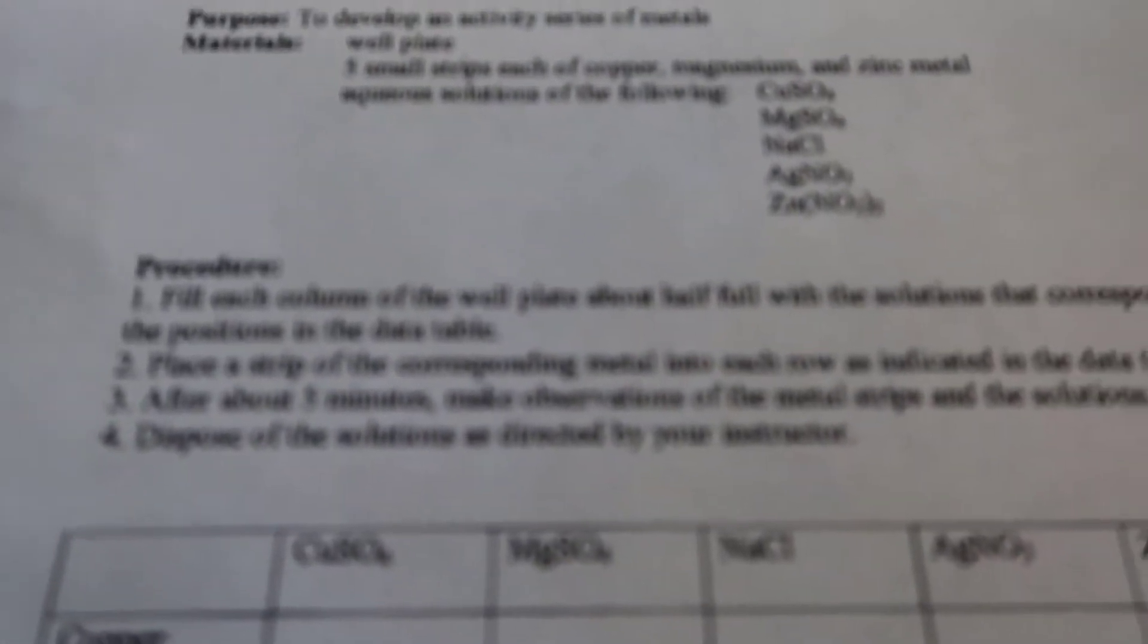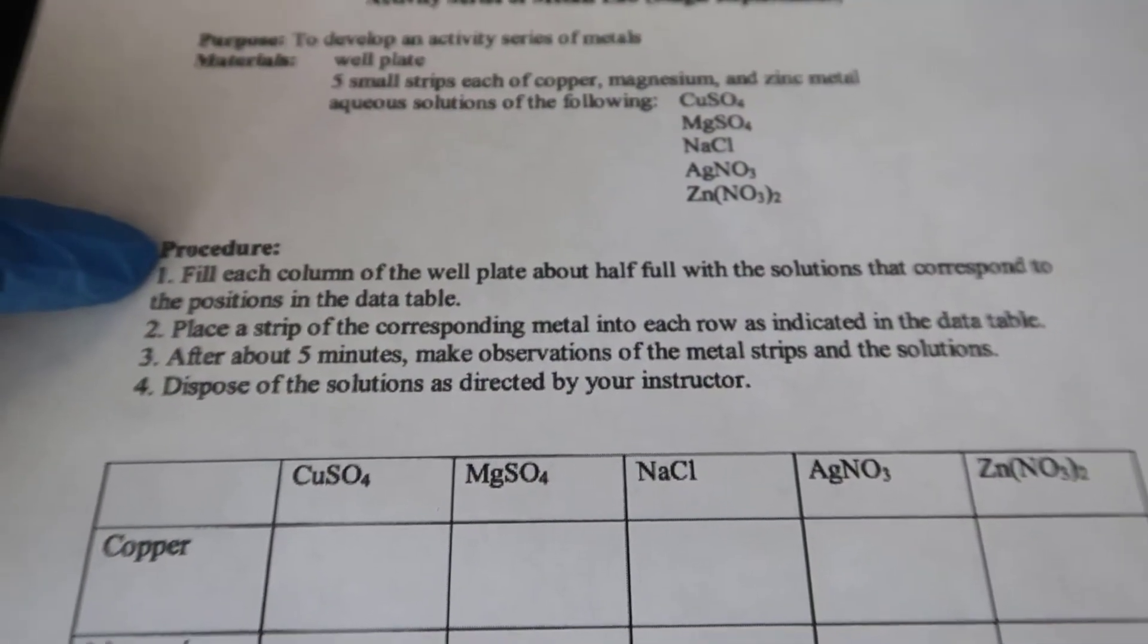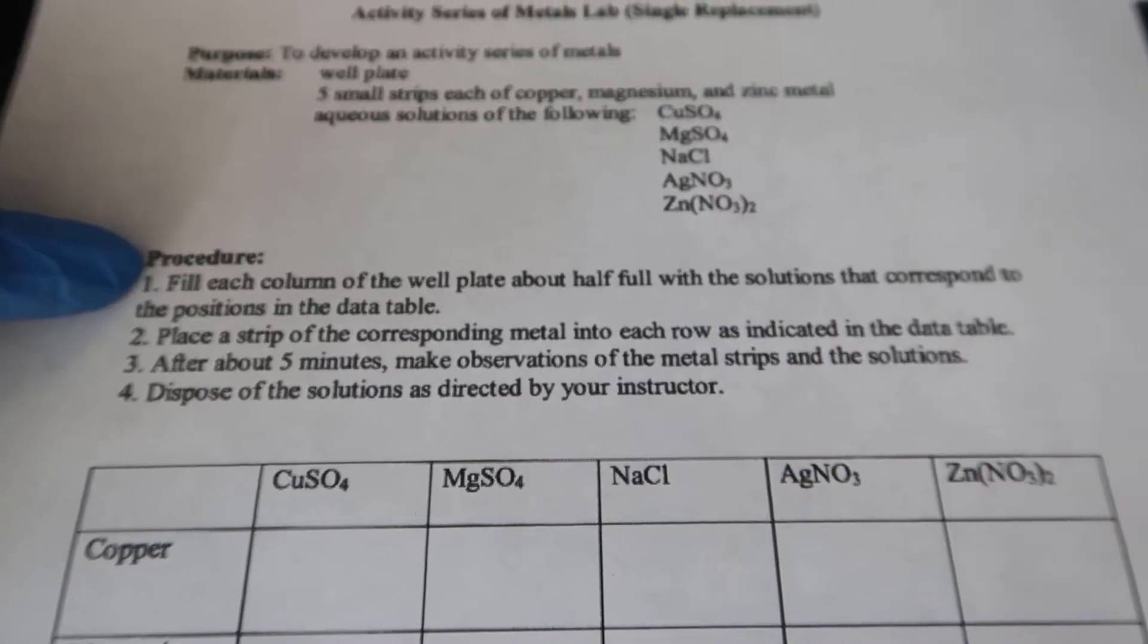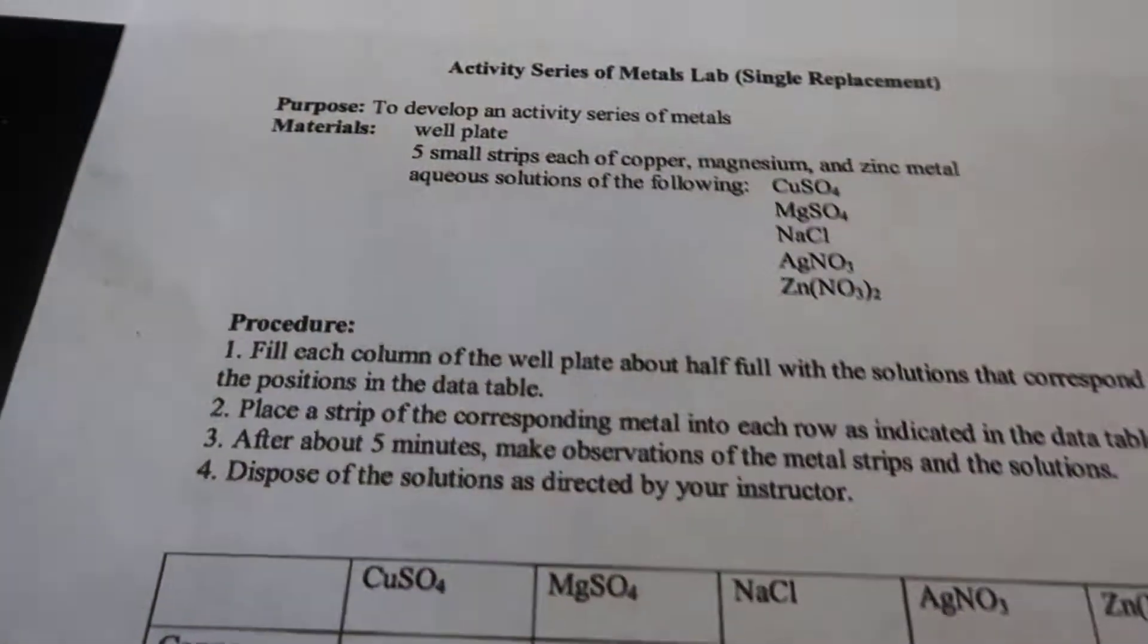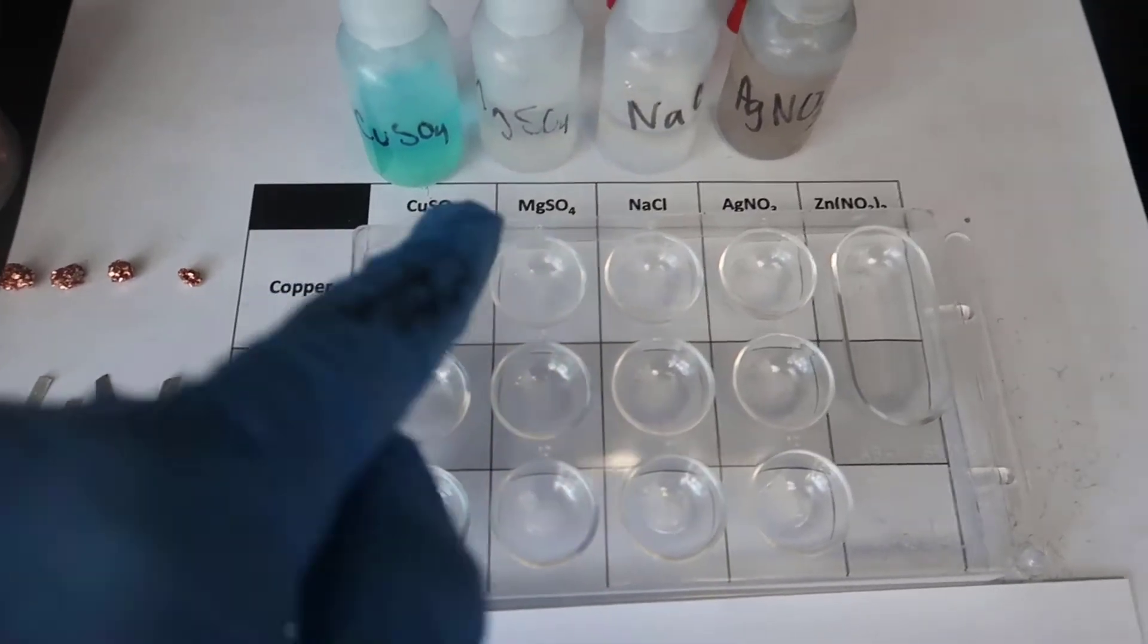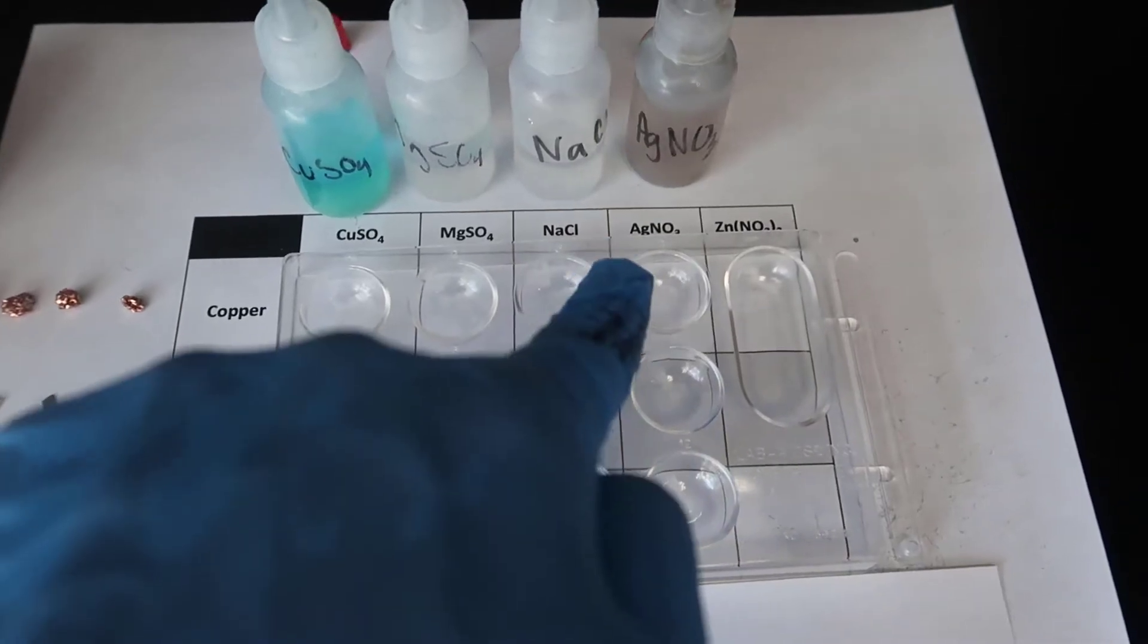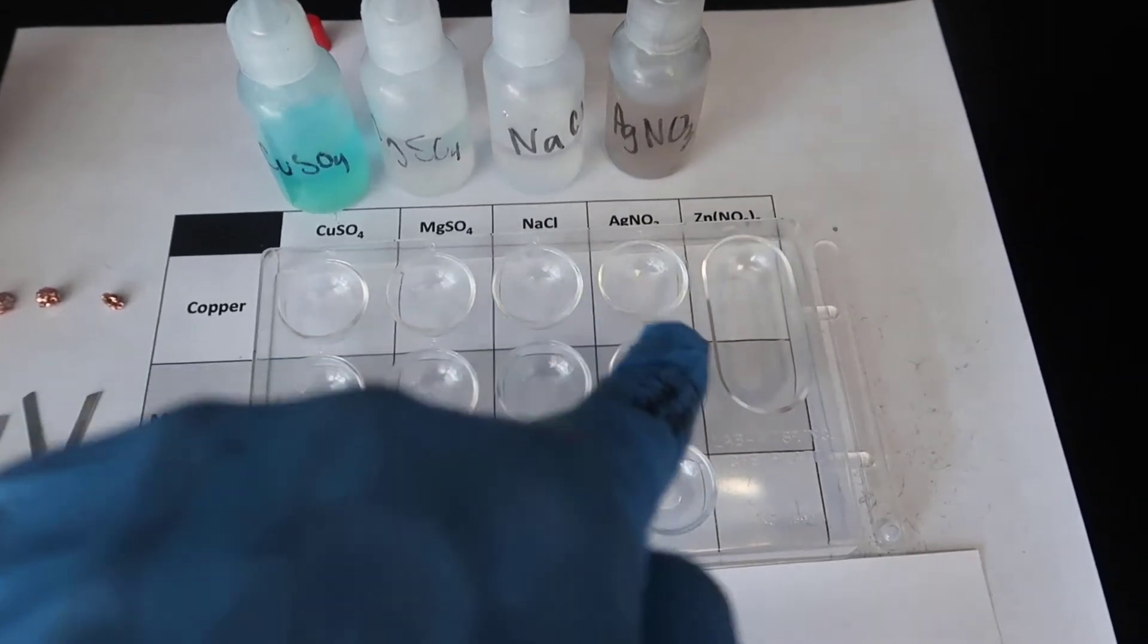So if we were in class, direction one is to fill each column of the well plate about half full with the solution that corresponds to the position on the data table. So I'm going to fill each column of the well plate with copper sulfate all the way down. This column with magnesium sulfate, sodium chloride, and silver nitrate.